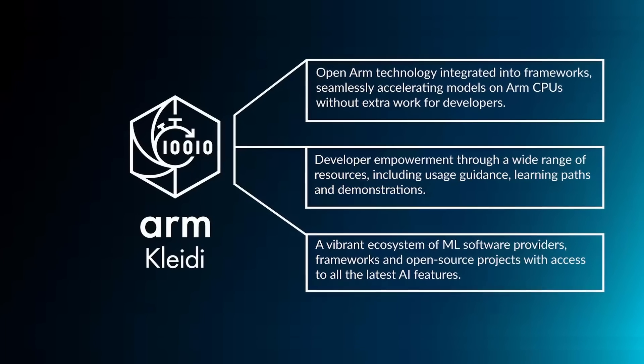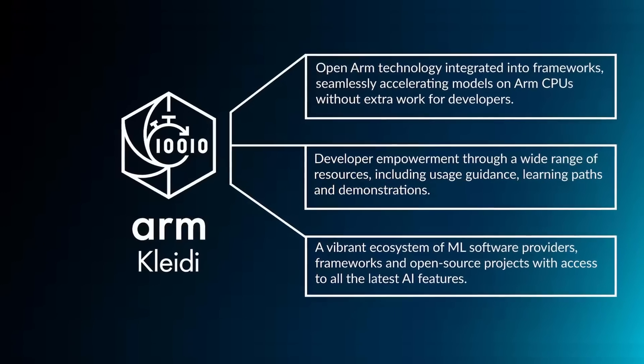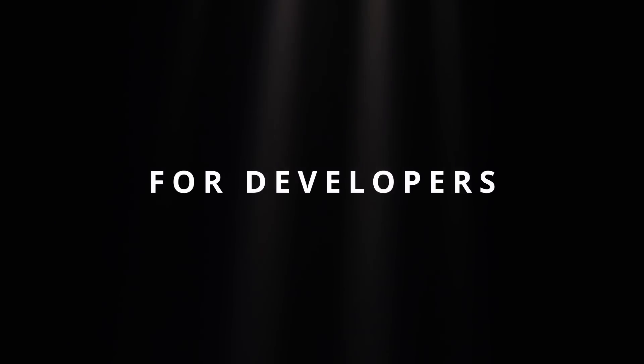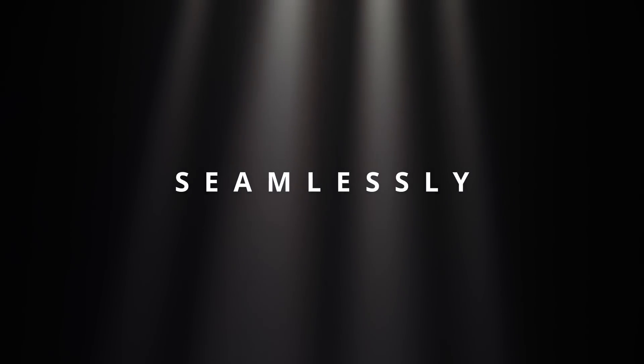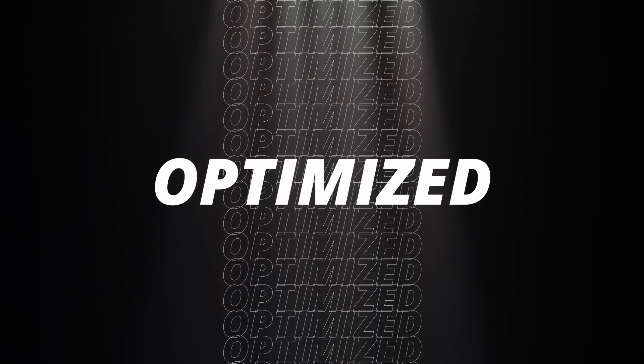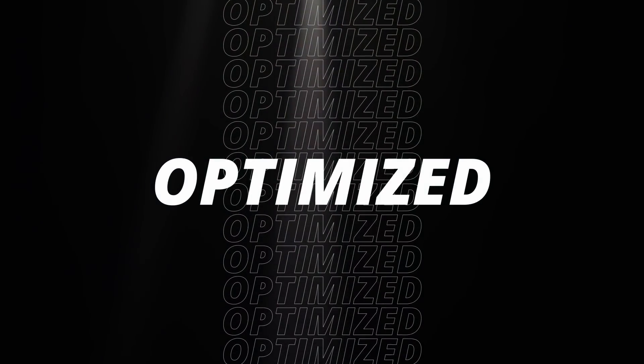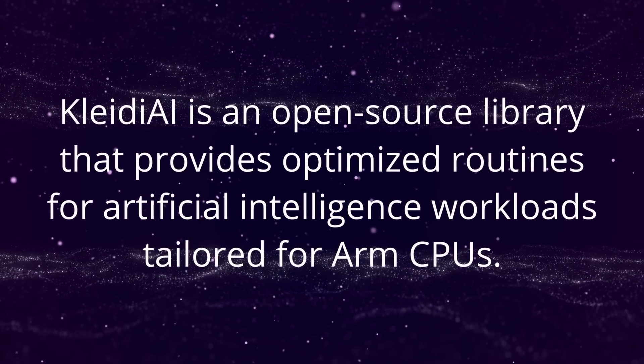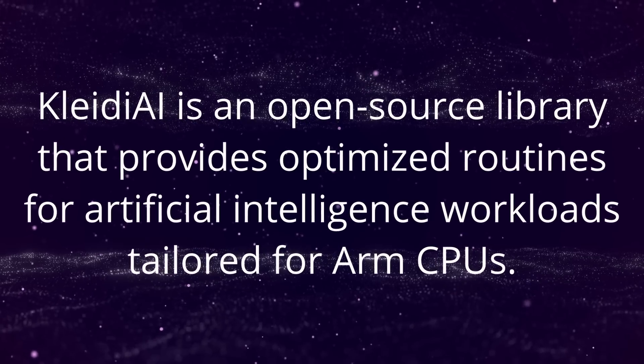KLEIDI is a central piece of ARM's strategy to enable AI on ARM-based mobile and server platforms. It covers a range of resources and partnerships for helping developers accelerate AI seamlessly on ARM, including a library of high-performance machine learning kernels — KLEIDI AI — which have been optimized for ARM CPUs using those various hardware accelerators. KLEIDI is available on GitHub, and these kernels have been integrated into various frameworks, supporting everything from classical machine learning all the way up to current generative AI.